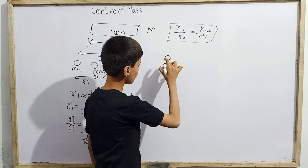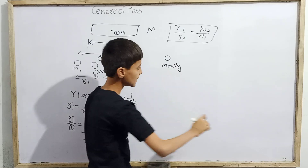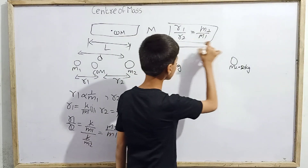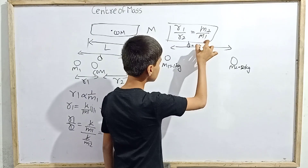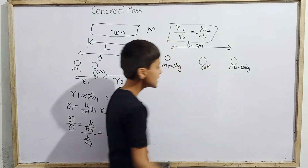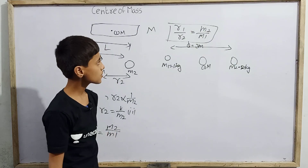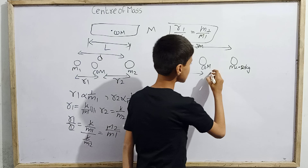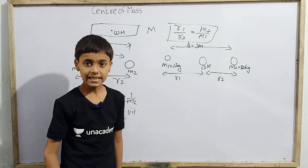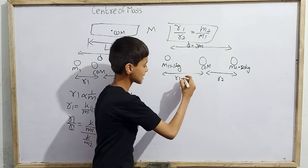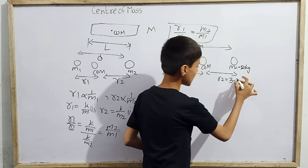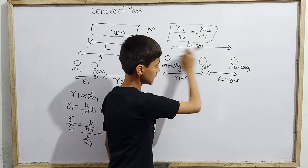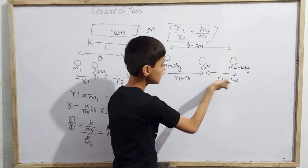Let's take an example. Suppose m1 equals 1 kg and m2 equals 2 kg, and the separation between them is d equals 3 meters. The center of mass is somewhere between them. We want to find exactly where. Let r1 equal x, then r2 will be 3 minus x, because the total separation is 3 meters and these two distances must add up to 3.